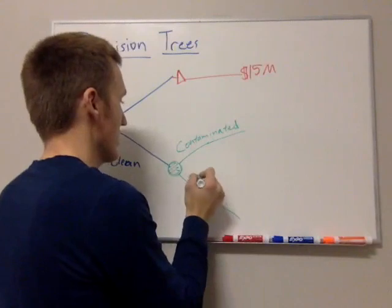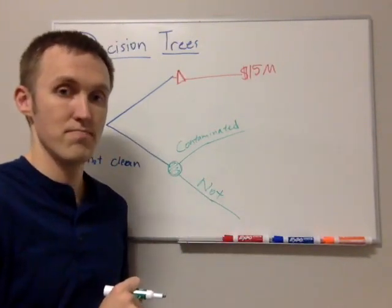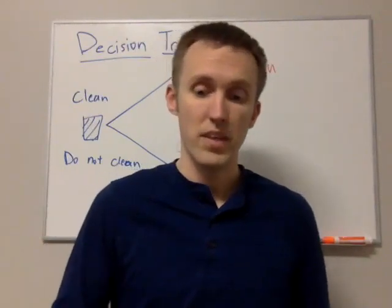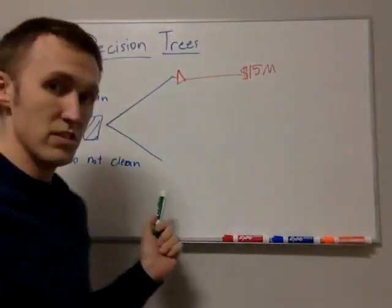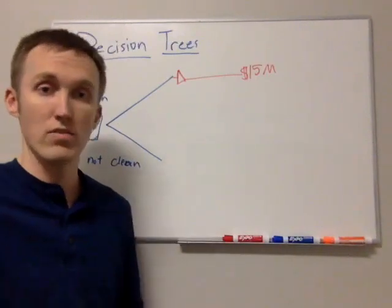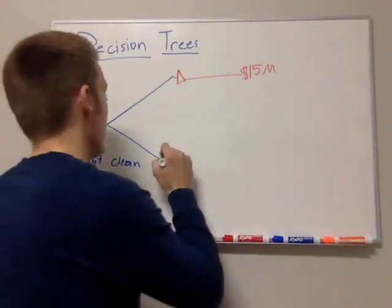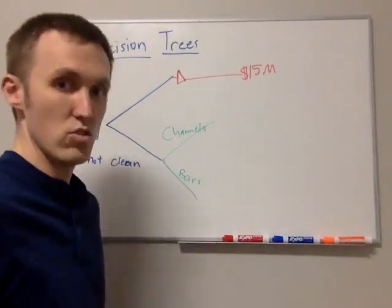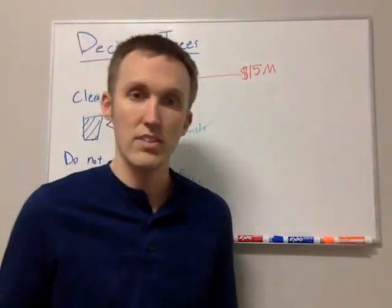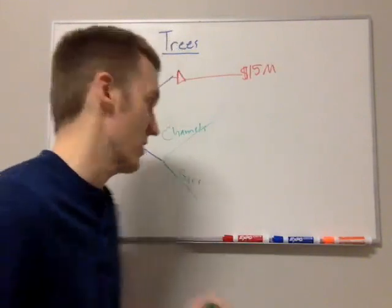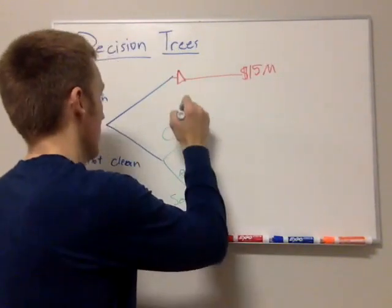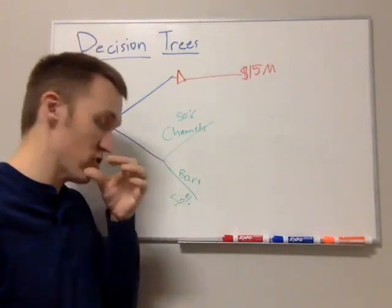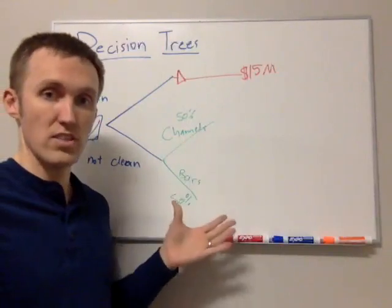In one case the well is contaminated, in the other it's not. But that's too simplistic because there are actually several different factors that determine whether the well gets contaminated. In our example, there are about three different factors. One question is: do we have sandbars or sand channels in the geology? Based on expert opinion, we assign a 50% probability to each one. The true geology is unknown, so we're assigning a 50% probability to whether it's channels or bars.